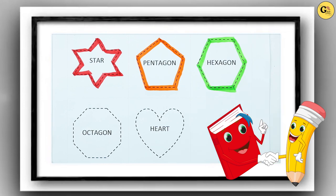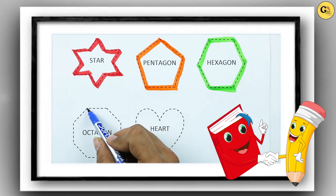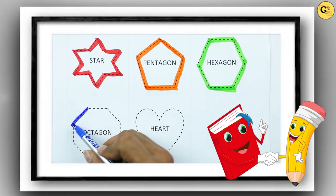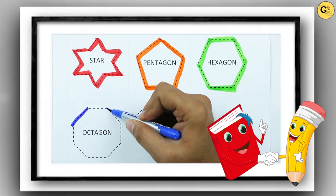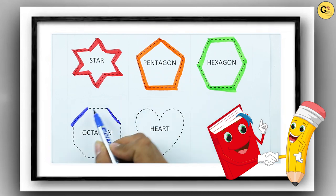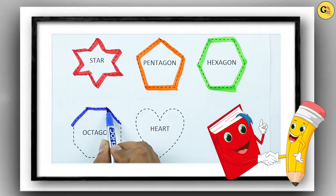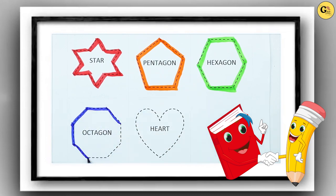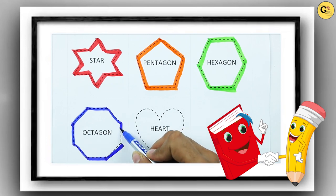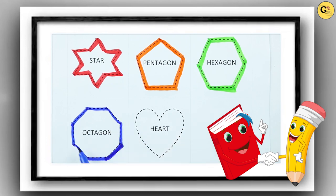Octagon: one line, two line, three line, four, five, six, seven, eight. Eight line means octagon.